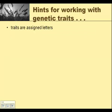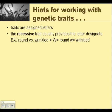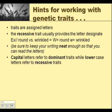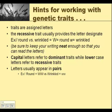Some hints for working with genetics traits: traits are always assigned different types of letters. The recessive trait is usually what provides the letter designation. So if there's round and wrinkled and you know that wrinkled is recessive, then we take a big W for round and a little w for wrinkled — the first letter of the recessive trait provides the letter we use. If we all consistently use the same letter, it makes it easier to talk about genetics problems in class. Capital letters refer to the dominant trait, and lowercase refers to the recessive trait.